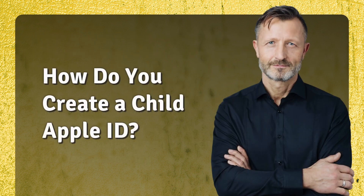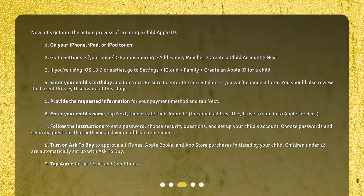Now, let's get into the actual process of creating a child Apple ID. On your iPhone, iPad, or iPod Touch, go to Settings > your name > Family Sharing > Add Family Member > Create a Child Account > Next. If you're using iOS 10.2 or earlier, go to Settings > iCloud > Family > Create an Apple ID for a child. Enter your child's birthday and tap Next. Be sure to enter the correct date — you can't change it later.